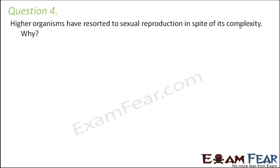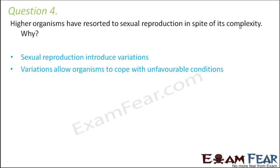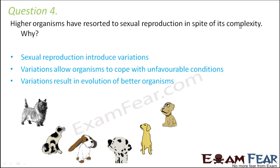Question number four: why have higher organisms resorted to sexual reproduction in spite of its complexity? Sexual reproduction introduces variations, and variations make the organism better suited to unfavorable environmental conditions. Variations also result in the evolution of better organisms. For example, if dogs want to survive in extremely cold conditions, having fur is advantageous, and such traits come about through variations.